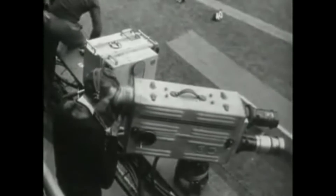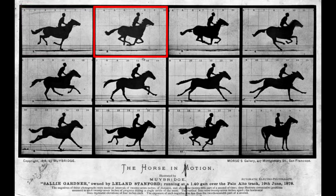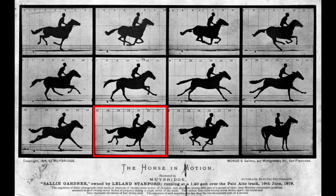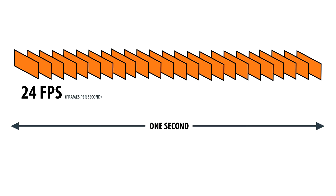Broadcast television, whether analog or digital, sends out 60 distinct images per second. The most obvious way to do this is to send out a sequence of complete frames, with each frame representing a whole scene. This is how movies have been made for more than a century – filmed and projected at a rate of 24 frames per second.